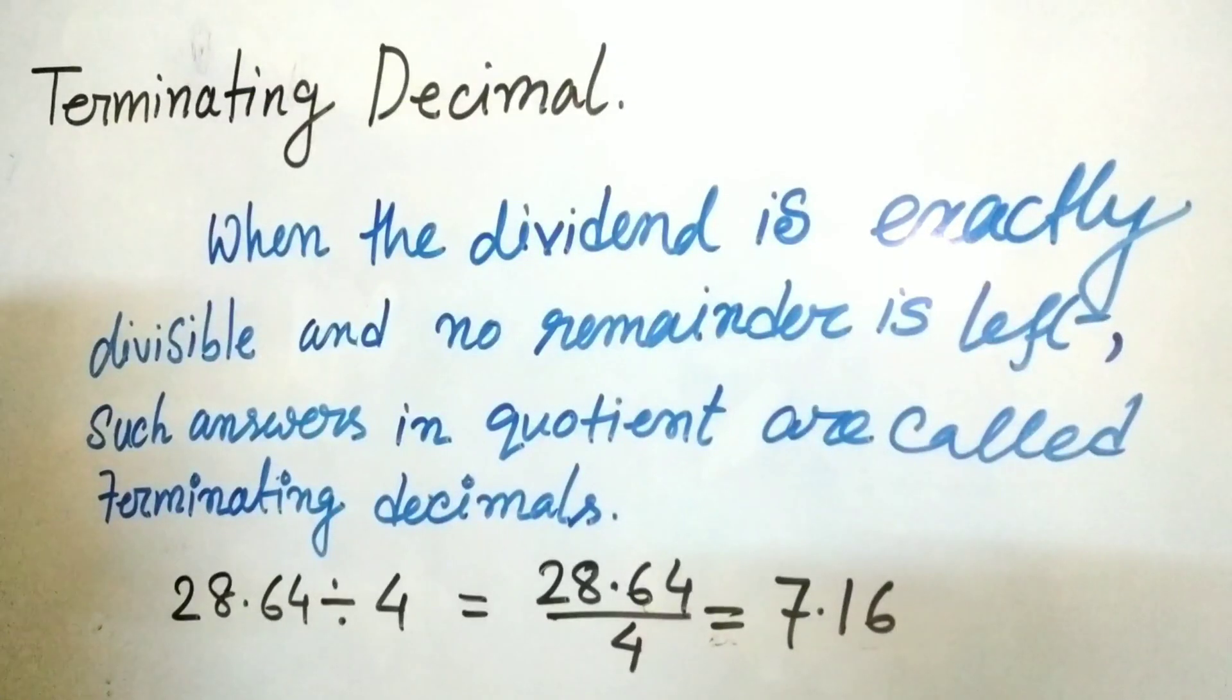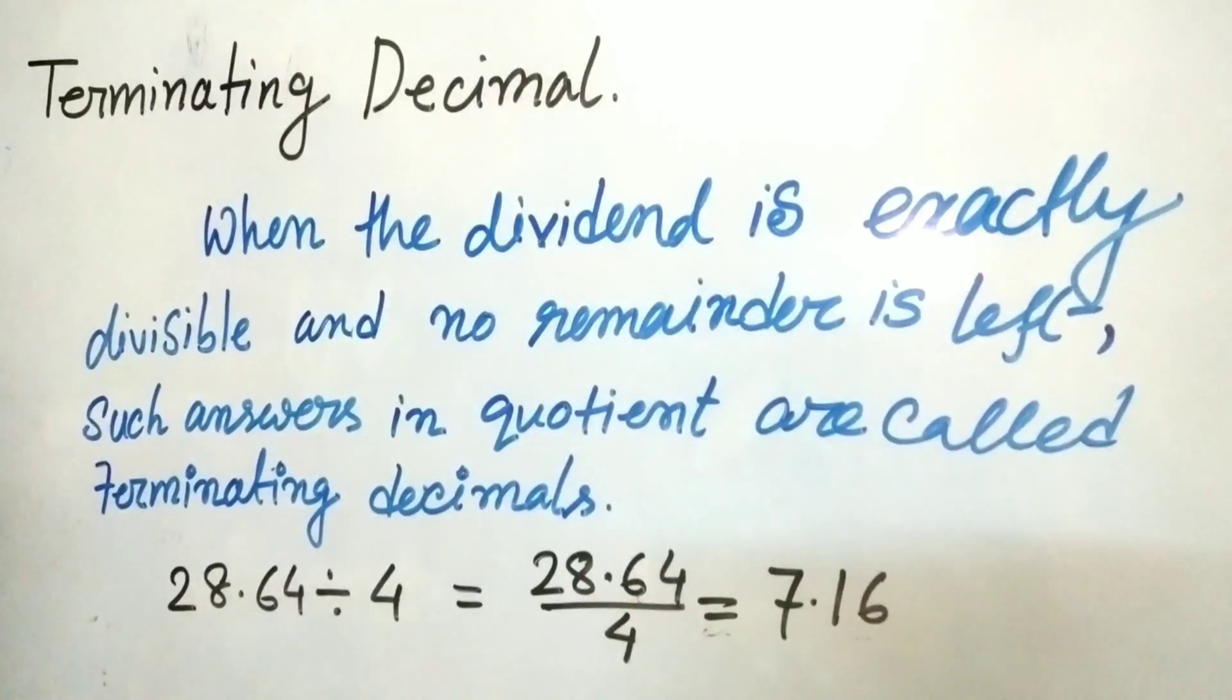Terminating decimal: When the dividend is exactly divisible and no remainder is left, such answers in quotient are called terminating decimals. For example, 28.64 divided by 4 equals 7.16, and you will get no remainder for this division.